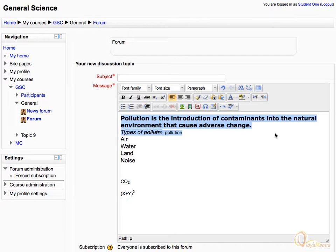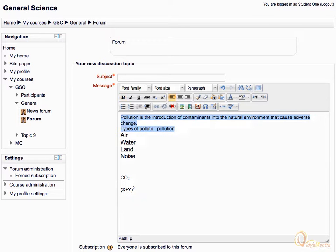The next button is used to remove any kind of formatting in the text. Select some text and click the remove formatting button to remove any kind of formatting in the text. Notice that all kind of formatting is removed from the selected text.